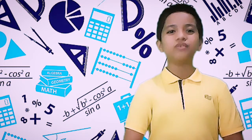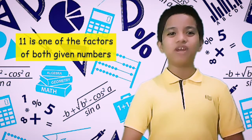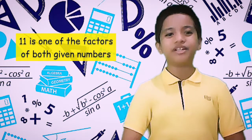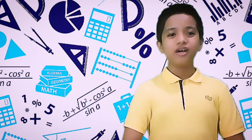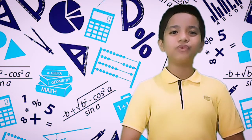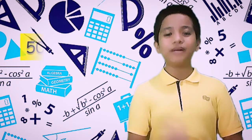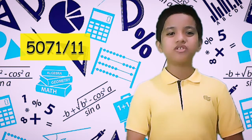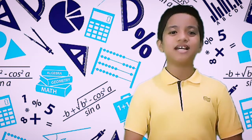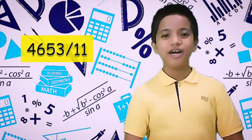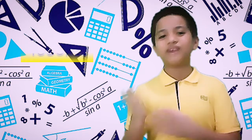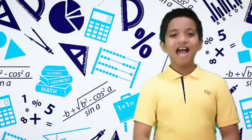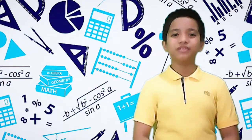Since 5071 and 4653 are both divisible by 11, we know that 11 is one of the factors of each number. All you have to do now is divide 5071 and 4653 by 11 to get the other factor of those numbers.